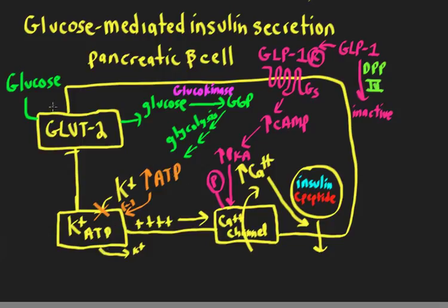That ATP is going to come from glucose entering the beta cell down its concentration gradient through facilitated diffusion mediated by glucose transporter type 2 (GLUT2), which is the same one found on the liver. Once that glucose enters the beta cell, it's phosphorylated by glucokinase to form glucose 6-phosphate, which brings glucose levels inside the beta cell back down, maintaining the concentration gradient for glucose to continue to enter and stimulate insulin secretion. This glucose 6-phosphate then continues down the glycolytic pathway, ultimately causing a rise in ATP inside the cell.